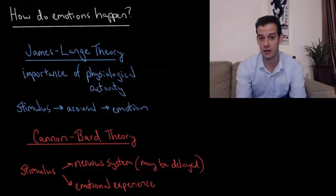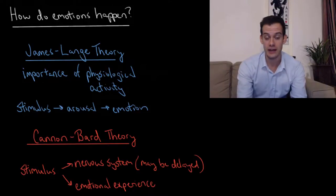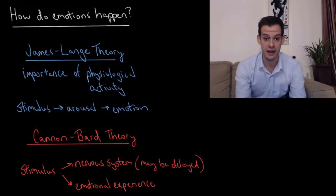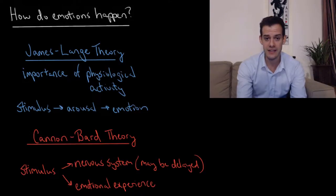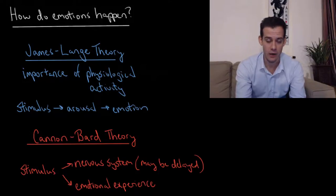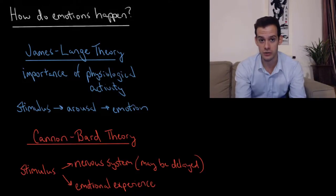We'll start with the James-Lange theory of emotion, based on the work of William James and Carl Lange, a Danish researcher who had similar ideas developed around the same time, although they were developed independently. In the James-Lange theory of emotion, there's a great deal of importance on physiological activity, the activity of the body, as being the source of where emotions are coming from.